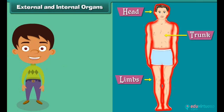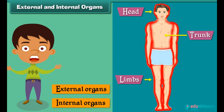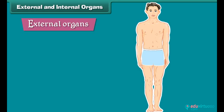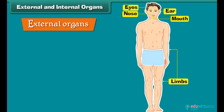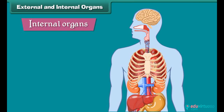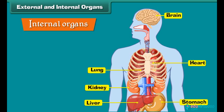Each of the three main parts of the human body bears many organs. These organs may be classified as external organs and internal organs. The organs that can be seen from outside are called external organs — for example, eyes, ears, nose, mouth, and limbs. The organs that cannot be seen from outside are called internal organs — for example, brain, heart, lungs, stomach, liver, kidneys, and bones.